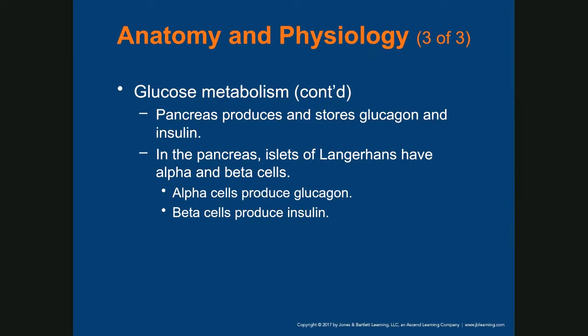Insulin comes out when there is an elevated level of glucose in the blood. It allows glucose to pass into the cell to meet the cell's needs. Whatever remains as excess will be converted to glycogen and stored in the liver. So insulin converts excess glucose to glycogen and stores it in the liver.